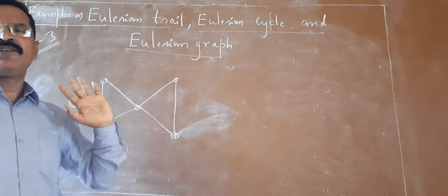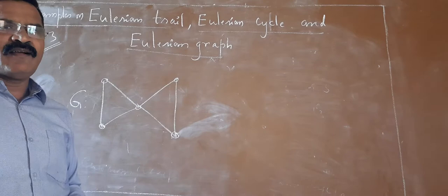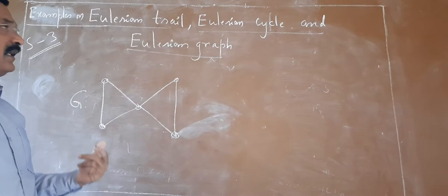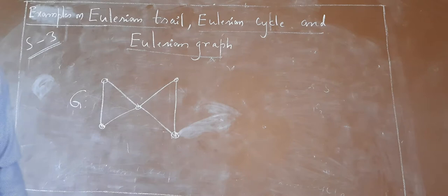Now we are going to discuss the third session. Before going to the characterizations of the Eulerian graph, it is better to consider one more session so that we understand the concepts very clearly by considering some more examples. So the topic of today's talk is: examples on Eulerian trail, Eulerian cycle, and Eulerian graph.